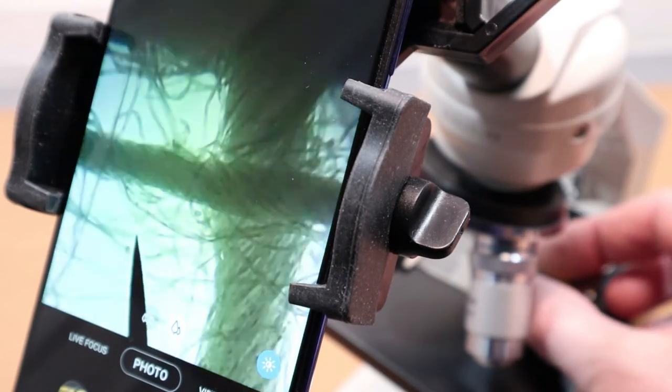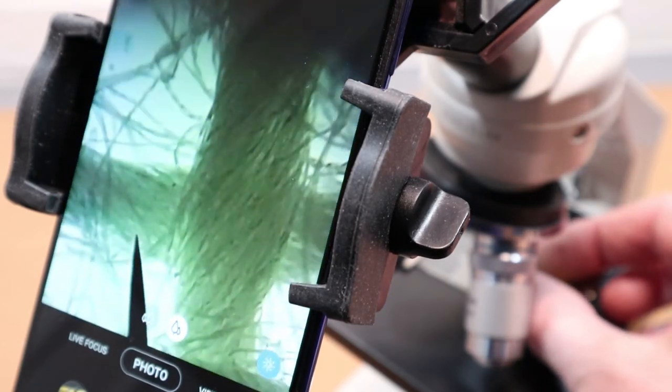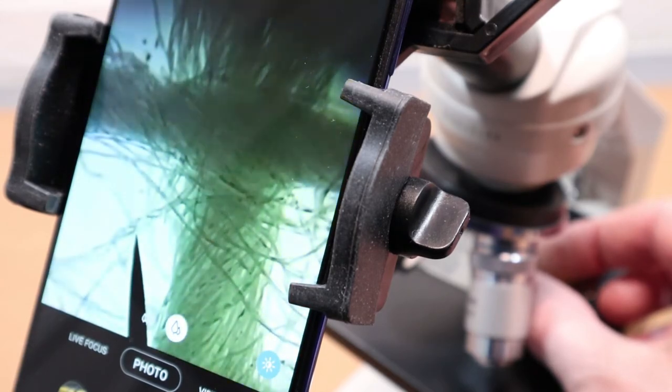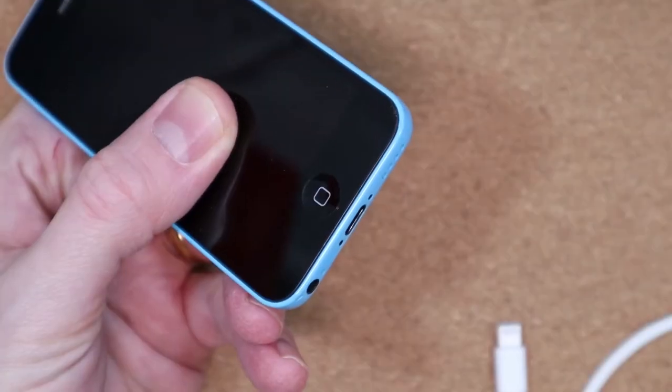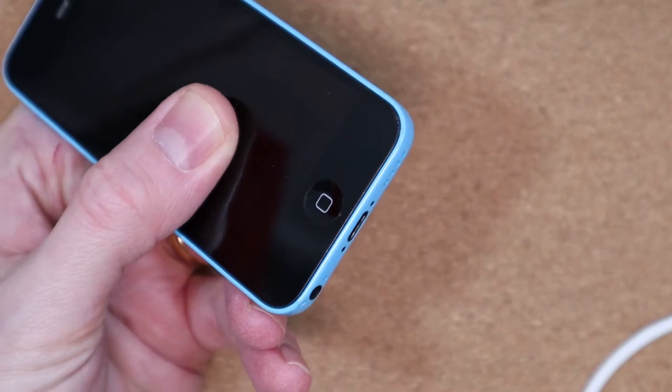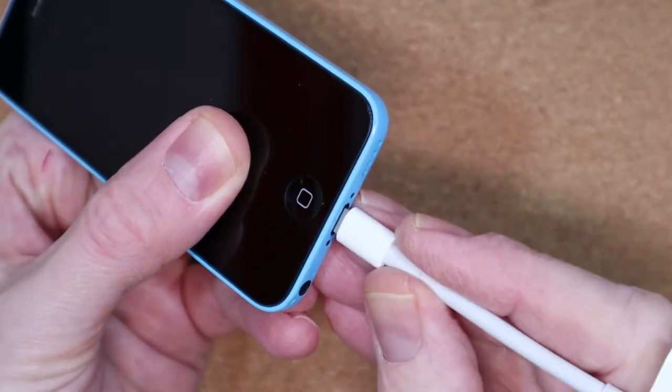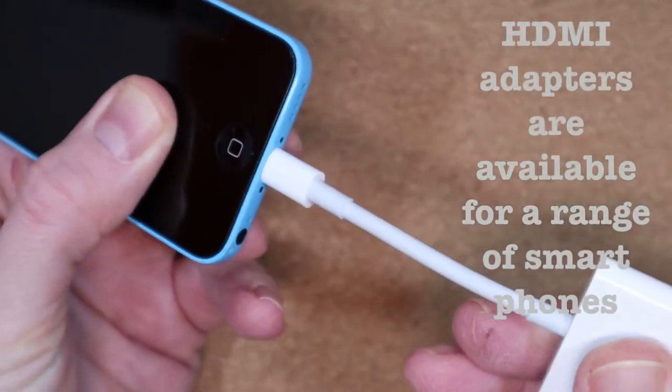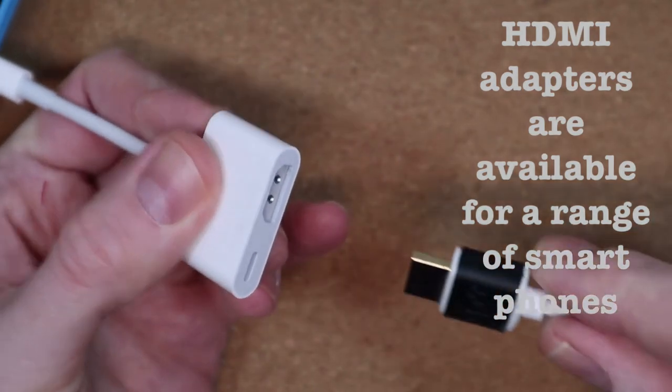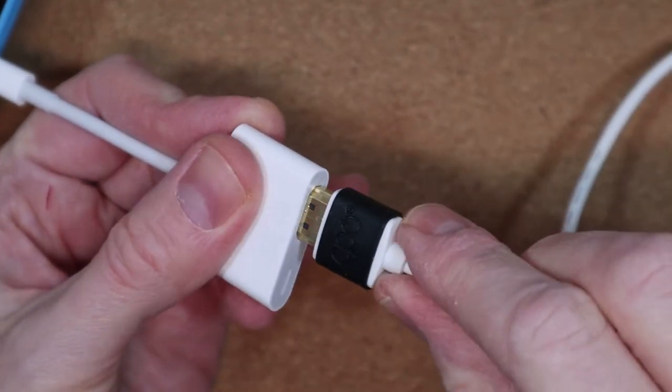Now I mentioned at the start that I was also able to livestream the image from the microscope, although to do that I had to use a different smartphone, an old iPhone 5c. The reason I use that is because I also have a lightning to HDMI adapter which allows me to connect the phone to a capture card so that images can be viewed on a computer.